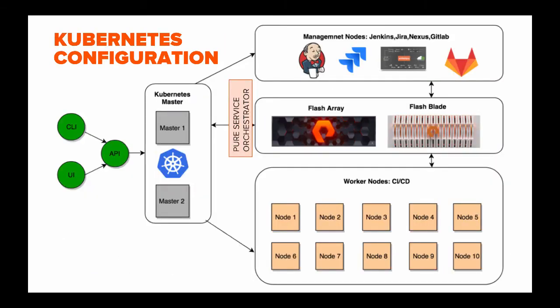What you see here is a Kubernetes configuration that has been set up. There are two Kubernetes master nodes that interact with the Pure Service Orchestrator, which enables container storage as a service. On the back end are Pure Storage FlashArray and Pure Storage FlashBlade. The worker nodes for the CI/CD pipeline are the container nodes set up for concurrent builds, and the management nodes consist of Jenkins, JIRA, Artifactory Nexus, and GitLab.